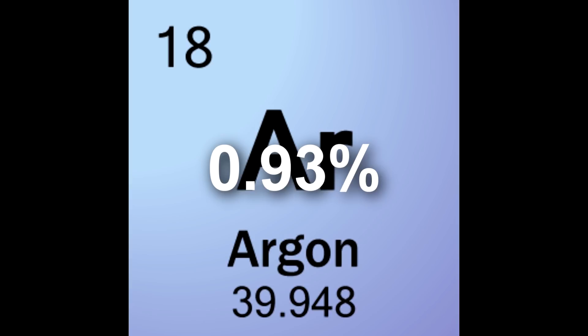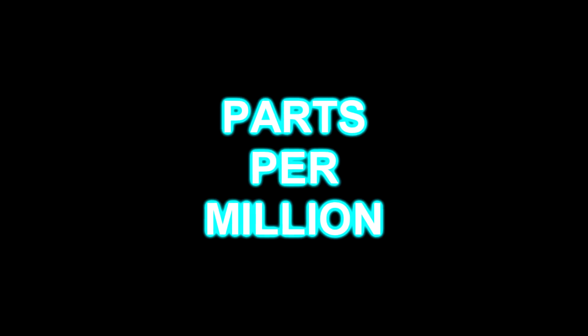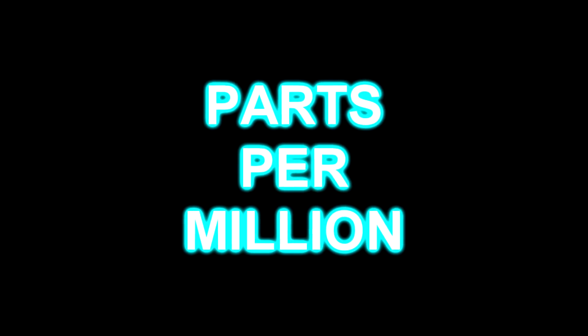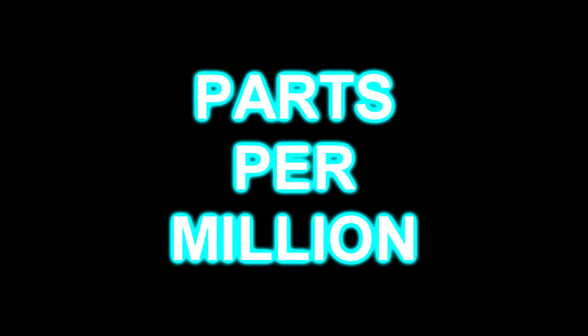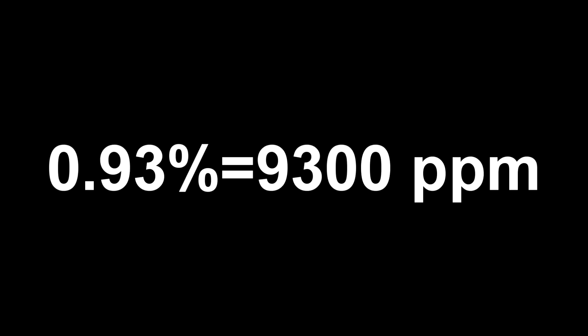For gases less abundant than argon, measuring by percentage won't be sufficient anymore as they quickly start dropping in value. To measure their abundance, science uses parts per million — simply taking a million particles (molecules in this case) and counting how many are of the same type. For example, 0.93% argon is 9,300 parts per million. Our next most abundant chemical comes in at 400 parts per million, or 0.04%, and that is the greenhouse gas carbon dioxide.